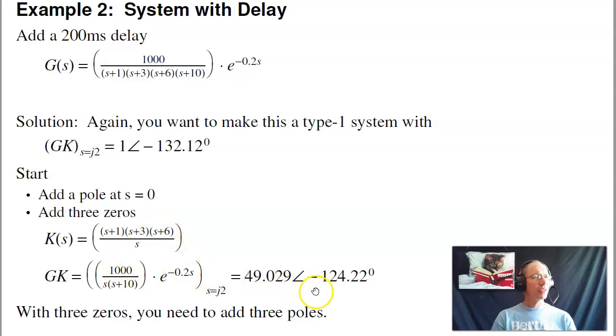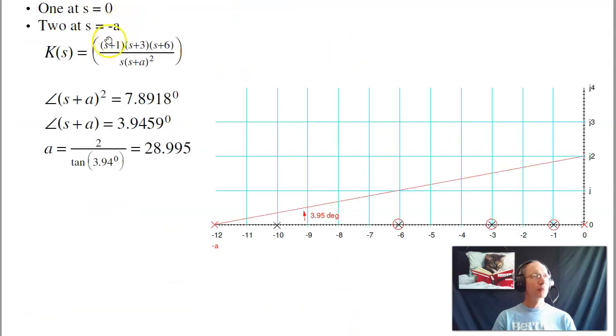I want it to be minus 132. I have too much phase margin. Too much is good. I added three zeros, I need to add three poles. The extra two poles need to eat up the difference. So add two poles. Those two poles have to add 7.89 degrees phase shift. So each pole has 3.94 degrees phase shift.